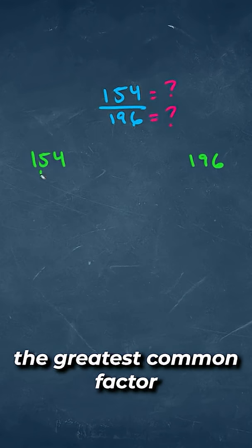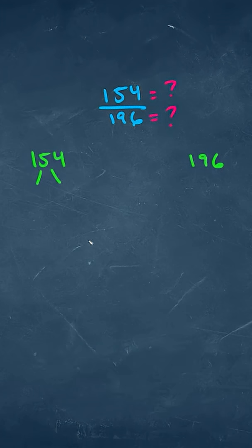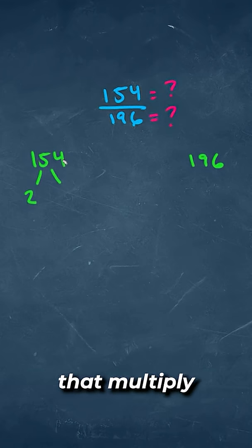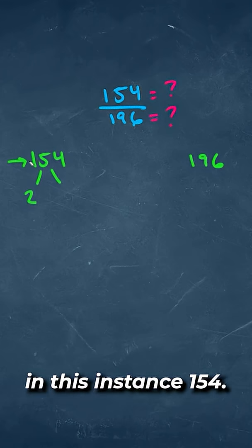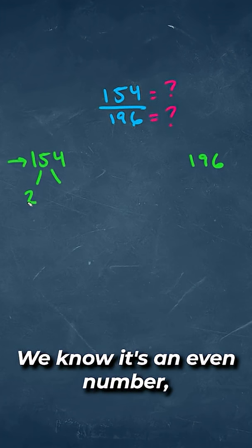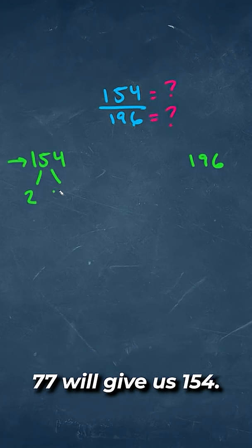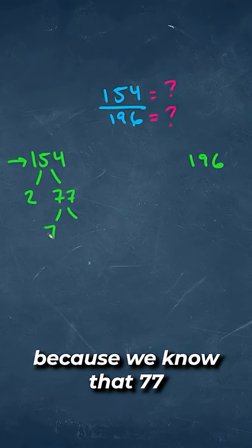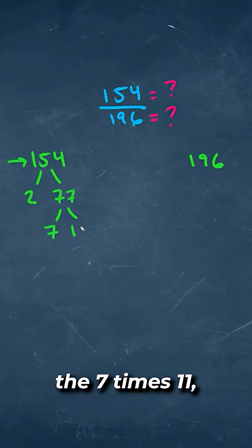We figure out the greatest common factor by doing a factor tree, meaning figuring out two numbers that multiply, in this instance, 154. We know it's an even number, so 2 times 77 will give us 154. We can also factor out this 77 because we know that 77 is 7 times 11.